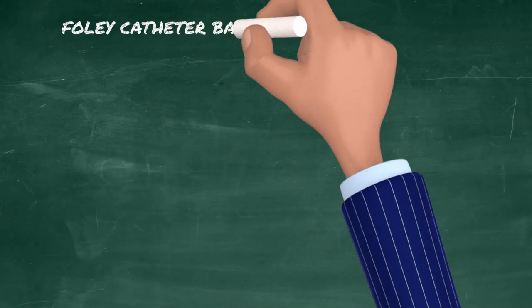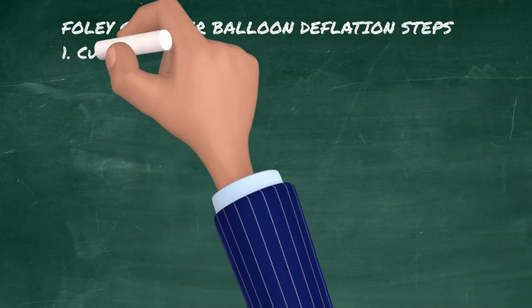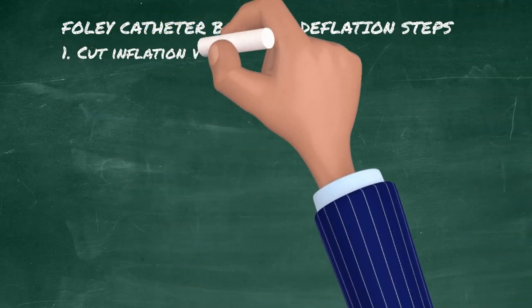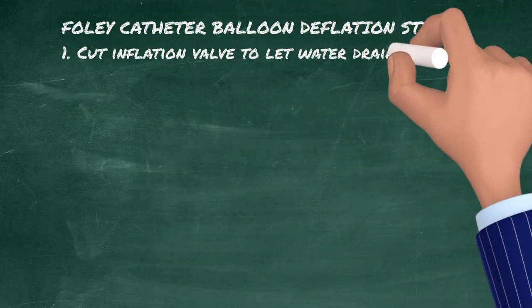Foley catheter balloon deflation steps. Step 1: Cut off the inflation valve to let water drain.